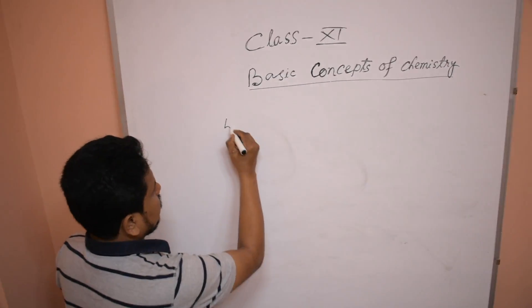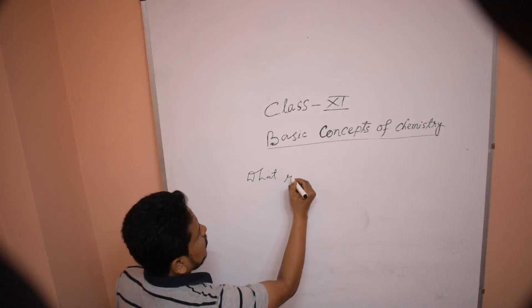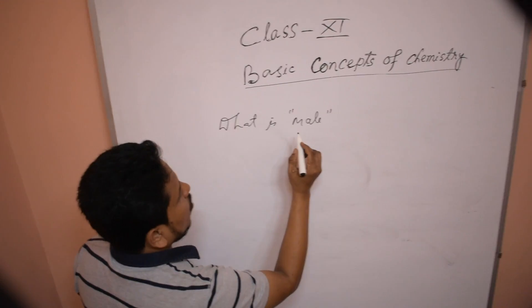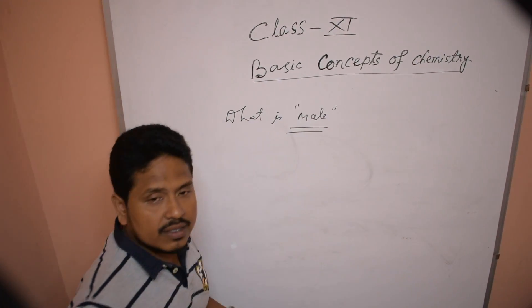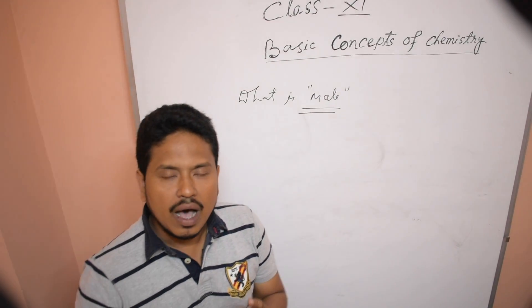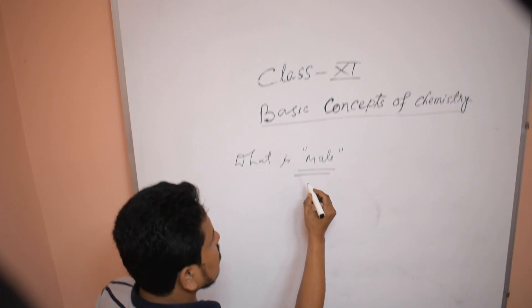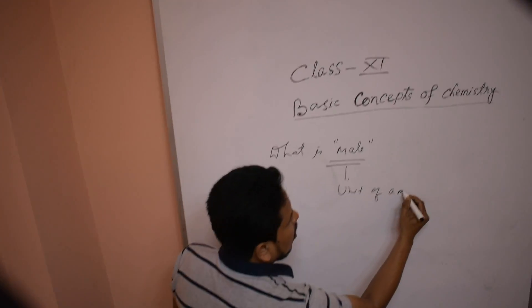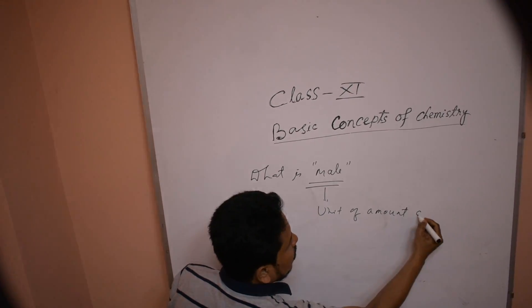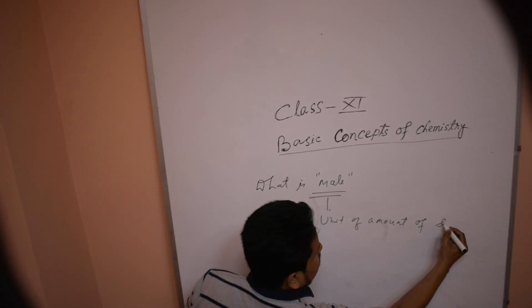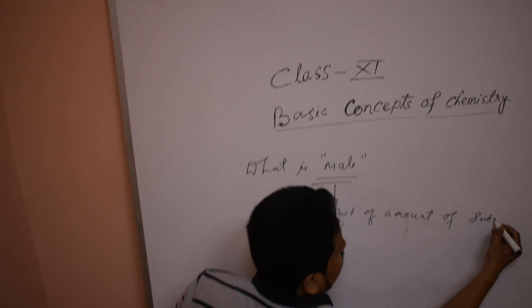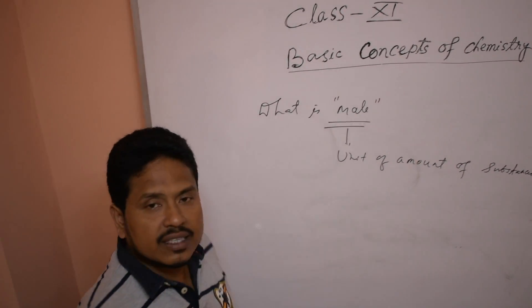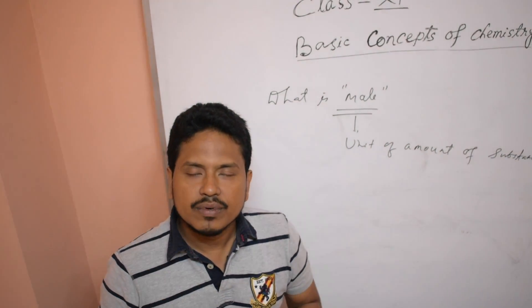What is a mole? Mole is the unit of amount of substance — it is the SI unit of amount of materials.